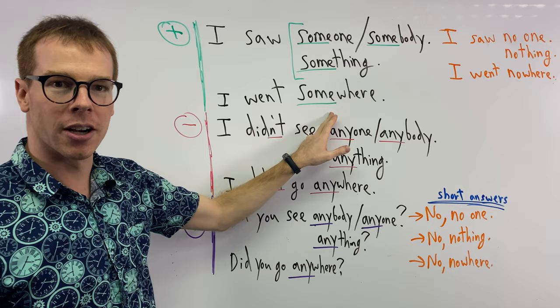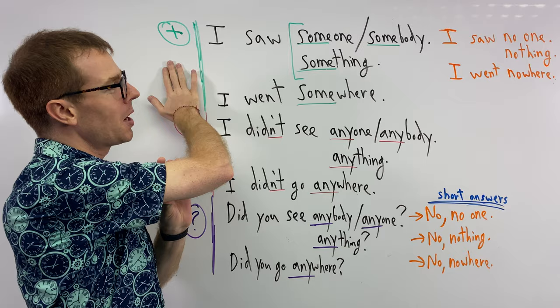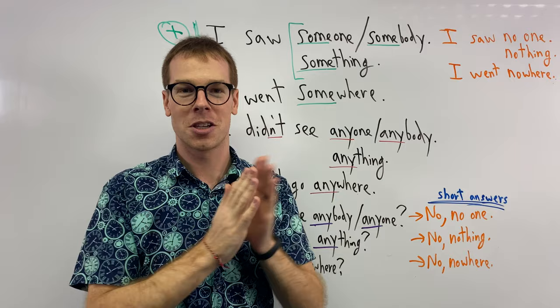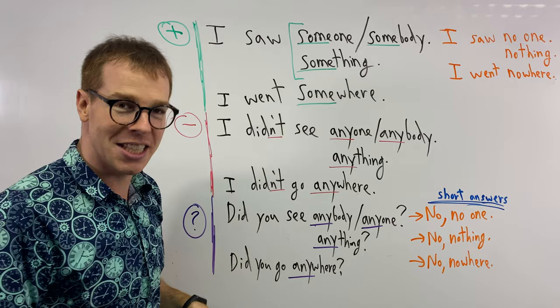These we use in positive sentences. When maybe we don't want to say the person, I saw Matt, right? You remember the other teacher who does the videos for the channel. I saw Matt, if we know the person we can use the name, but maybe I see someone, I see a person, I don't know who they are.